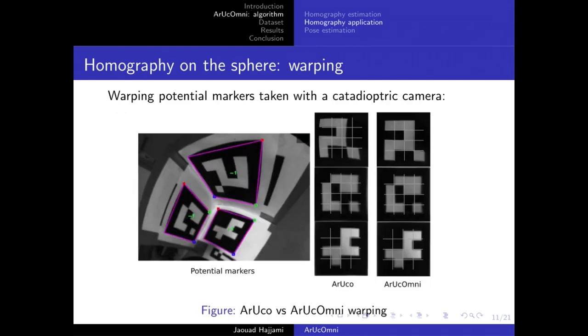Here we show visually the benefits of this approach which can correctly rectify the marker, allowing us to extract the binary code of the marker. The extraction very often fails using standard AruCo homography estimation based on perspective projection only. As you can see on the right side of this figure, the grid perfectly fits on the bits of the marker using AruCo Omni.